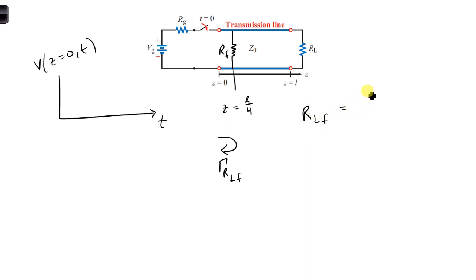which is 1 over 1 over Rf plus 1 over Z naught. And this, if we plug in our numbers, is 1 over 5 plus 1 over 50, which is 4.55 ohms.